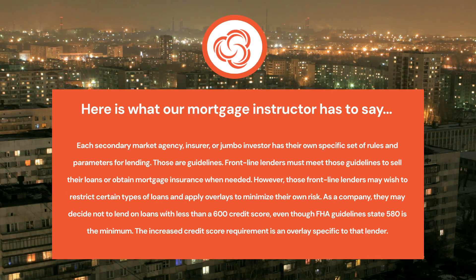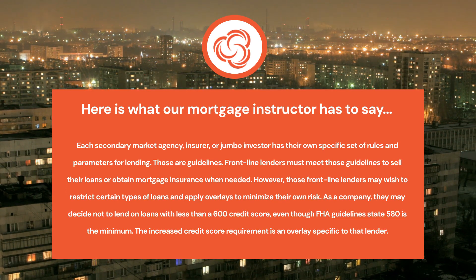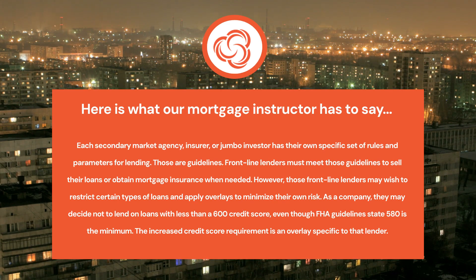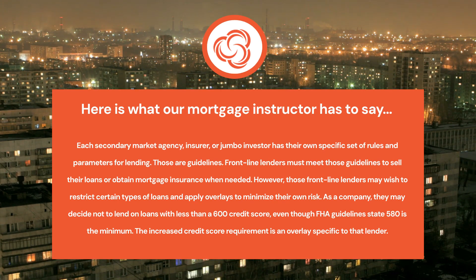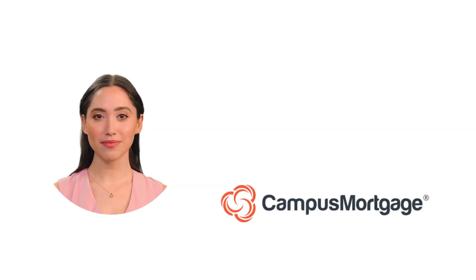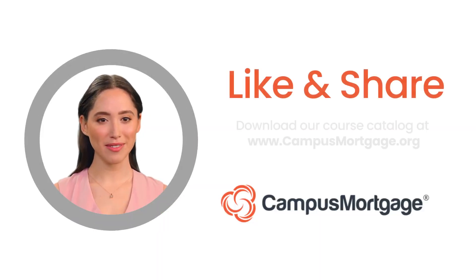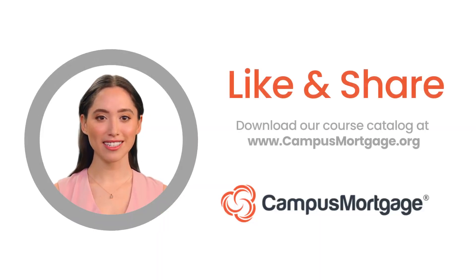They may decide not to lend on loans with less than a 600 credit score, even though FHA guidelines state 580 is the minimum. That increased credit score requirement is an overlay specific to that lender. This concludes our one-minute video.